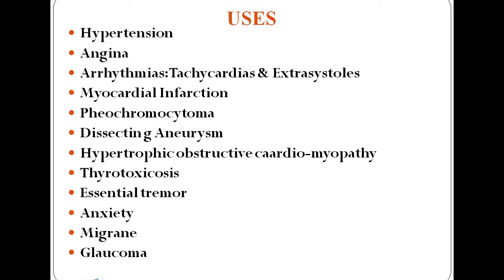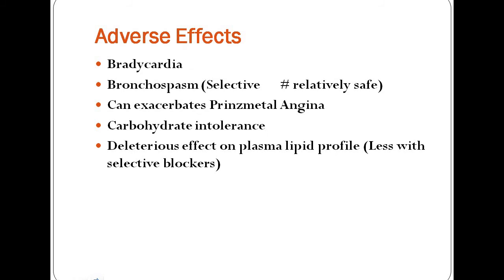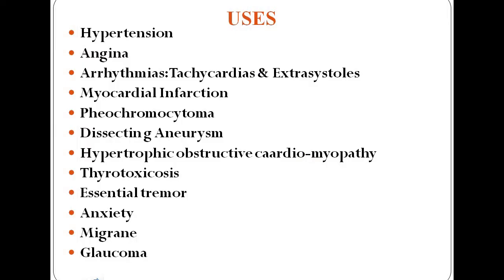The adverse effects of beta blockers include slowing of the heart or bradycardia, precipitation of asthma which is called bronchospasm, and exacerbation of Prinzmetal angina — so they are contraindicated in Prinzmetal angina, whereas they are given in classical angina. They also cause carbohydrate intolerance, and have an adverse effect on plasma lipid levels. Beta-1 selective blockers have less adverse effect on lipid metabolism.